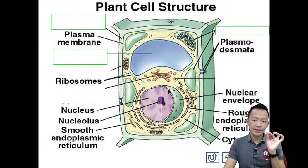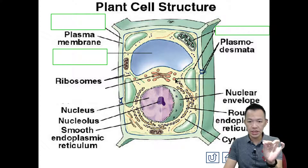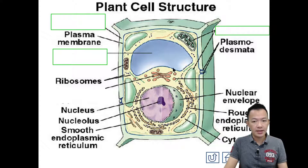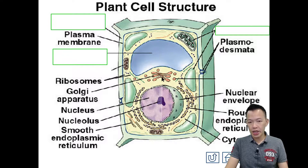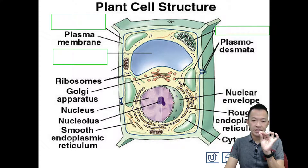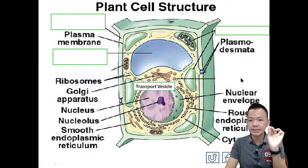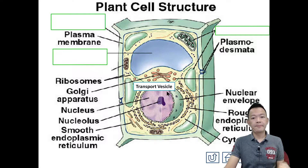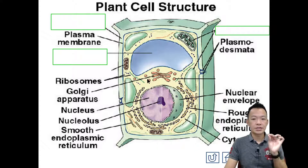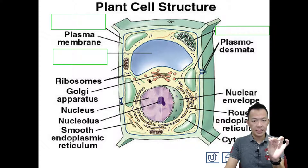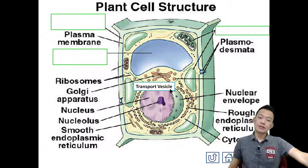再来，somewhere around the rough endoplasmic reticulum, there are small vesicle granules. And between these vesicles, there are other organelles not attached to the nucleus - 它跟nucleus没有黏在一起. 旁边总是一粒一粒的东西，这个叫Golgi apparatus. And between the Golgi apparatus and the rough endoplasmic reticulum, 这个之间的一粒一粒就叫transport vesicle. Label here - transport vesicle.